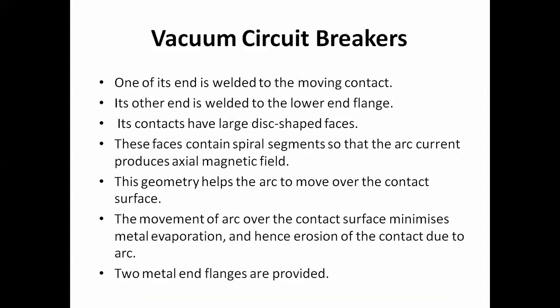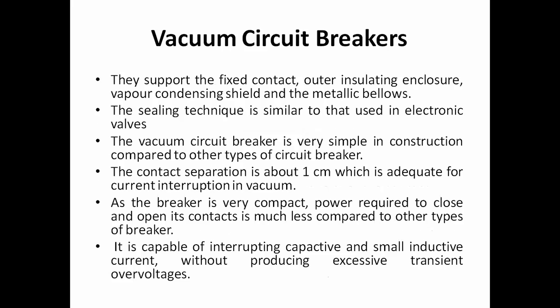Certain points related to the construction of the vacuum circuit breaker: one end is welded to the moving contact and the other end is welded to the lower end flange. The contacts have large disc-shaped faces. These faces contain spiral segments so that the arc current produces an axial magnetic field. This geometry helps the arc to move over the contact surface. The movement of the arc over the contact surface minimizes metal evaporation and hence erosion of the contact due to the arc. Two metal end rings are also provided in this VCB. I will share this PPT with you so you can get an idea of how this vacuum circuit breaker operates.